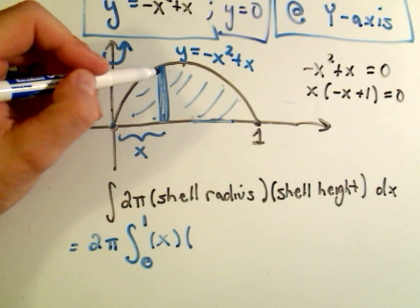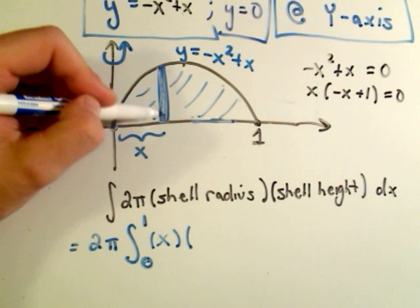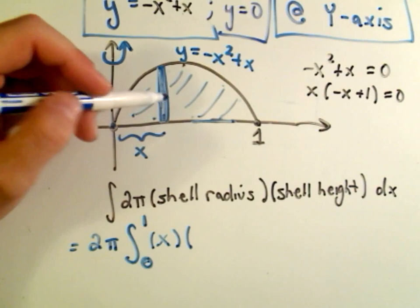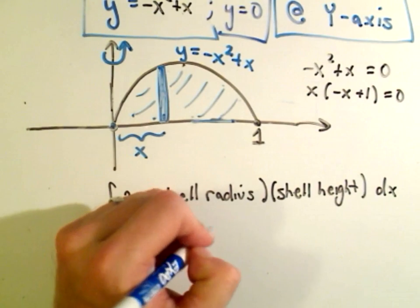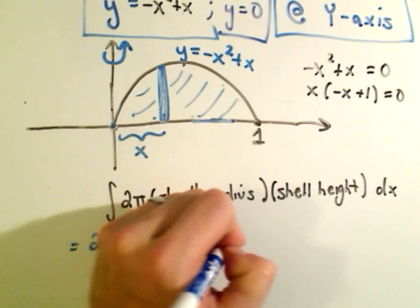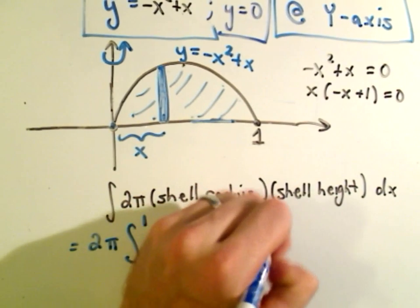So I'll just take x and then multiply that by the shell height. The shell height is like finding areas, and you just take the top curve, subtract away the bottom curve, and that will give you the shell height. So the shell height in this case will be negative x-squared plus x dx, and we now have this set up to find our volume using shells.